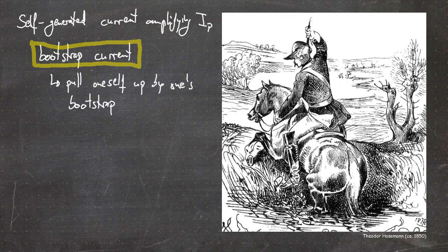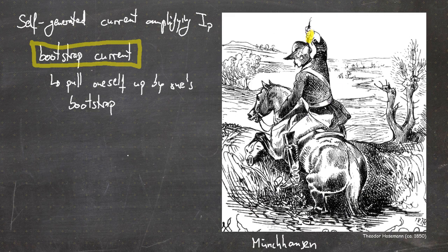In German there is a legend about not somebody using his own bootstraps, but Baron Münchhausen, who is able to drag himself out of a swamp where his horse is stuck in, by pulling at his own hair. This is basically the same effect, which is of course not physically possible - in contrast to the bootstrap current, which is a physical effect observed in plasma dynamics in the tokamak.